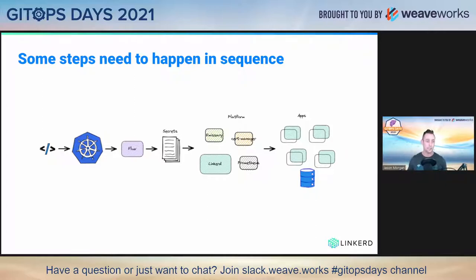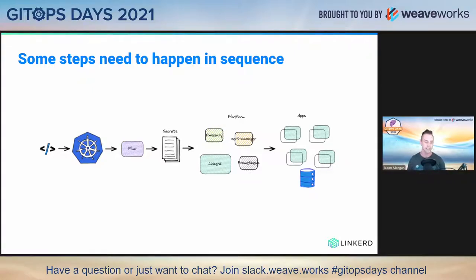This is almost my last slide. When we think of GitOps, or at least when I first read about GitOps in 2016 from a Weave blog, I really liked the idea of putting everything into Git and having it apply directly to my Kubernetes cluster. But the thing I figured out after using it for a bit is some steps need to happen in sequence.